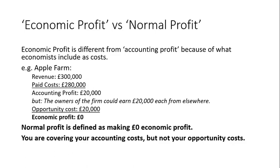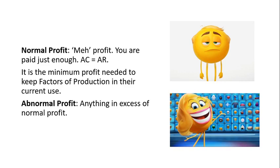That's this idea about economic profit. Normal profit is like 'meh' profit — you're paid just enough, AC equals AR — the minimum profit needed to keep the factors of production in their current use, to keep that firm in the industry in the long run. Whereas abnormal profit is anything in excess of normal profit — it's going to attract firms into the industry because you're exceeding your opportunity costs.